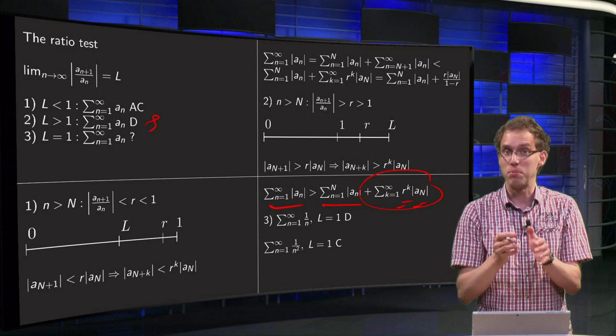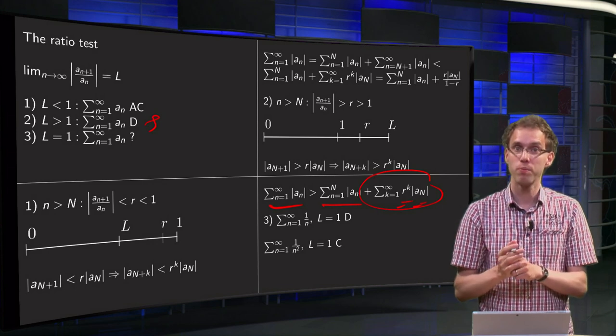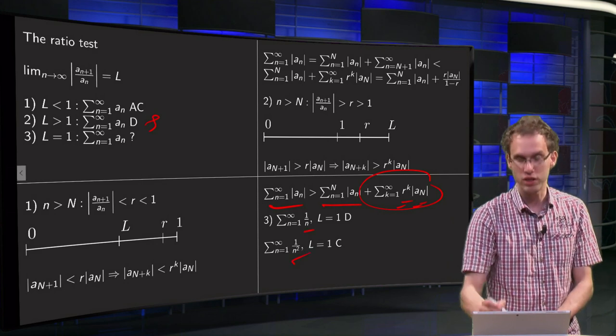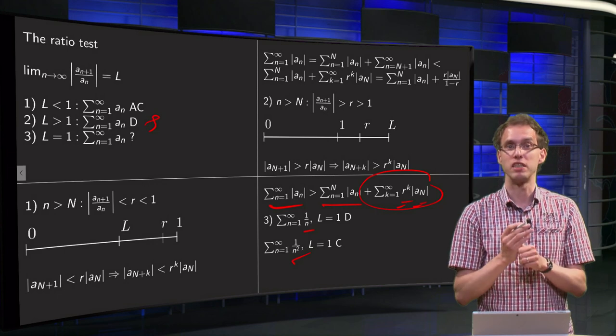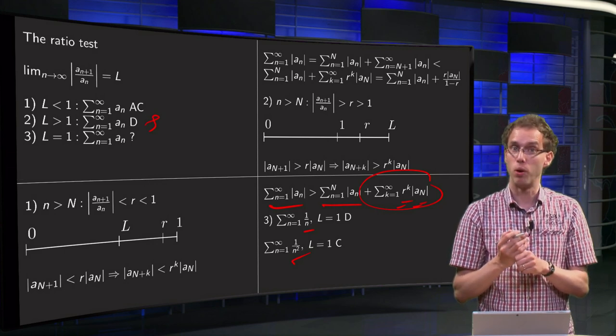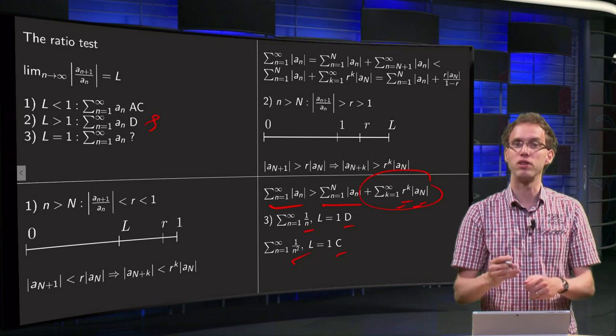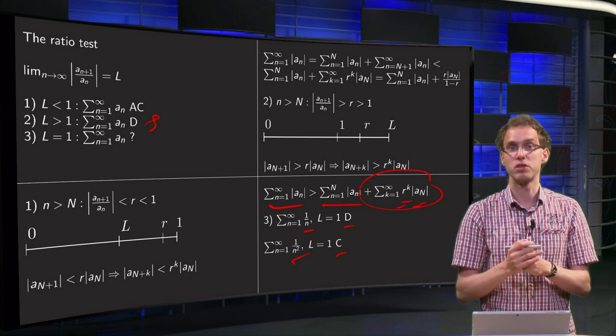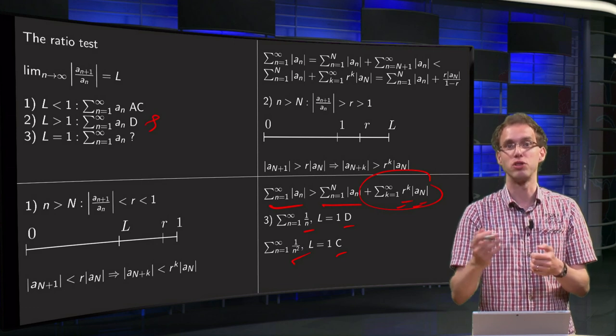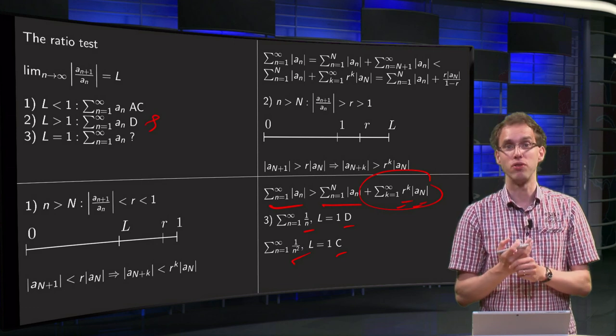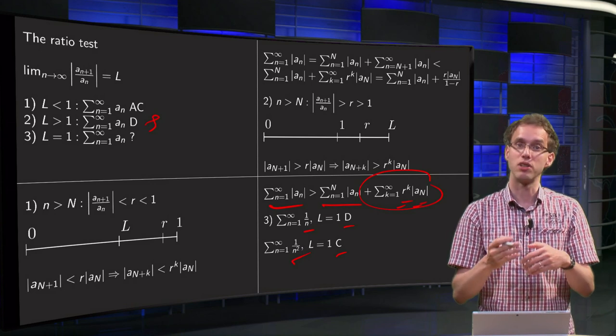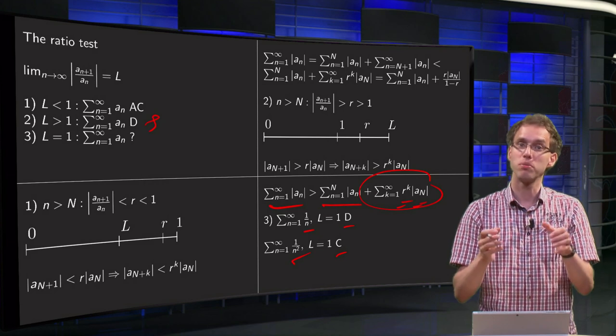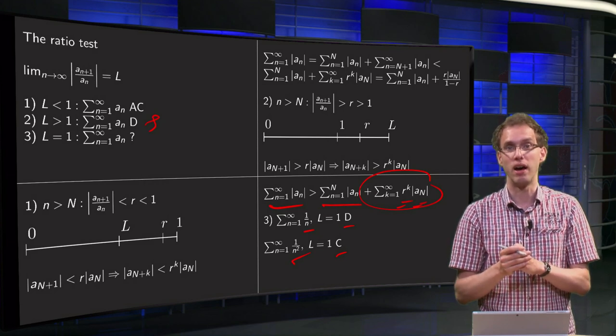Well what about the case in between L equals exactly 1? Well then you don't know what is going on. Try for example the 1 over n and the 1 over n squared, they both have as their L one, but this one is divergent, this one is convergent, so if L equals 1, you do not know what is going to happen. Your series can be either convergent or divergent, and that is also the weakness of this test. It tells in a lot of cases whether your series is convergent or divergent, but sometimes it doesn't tell you either of them.